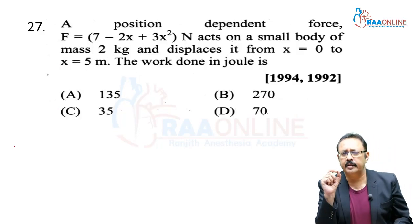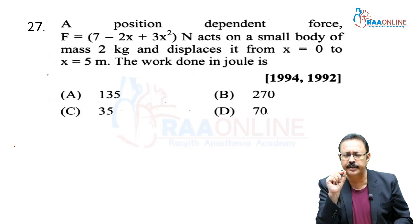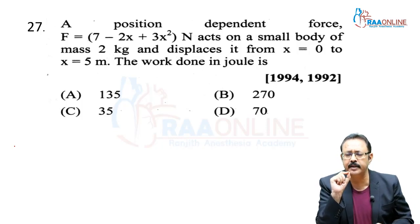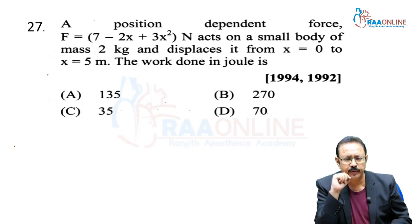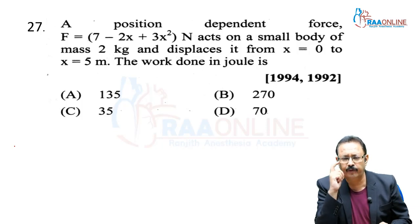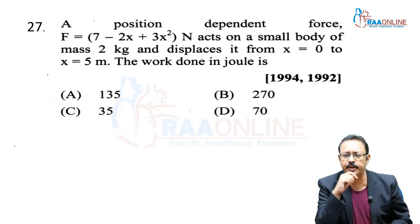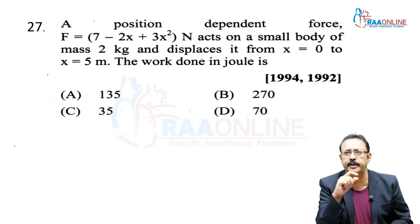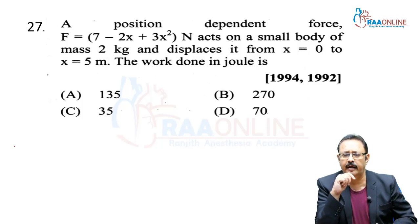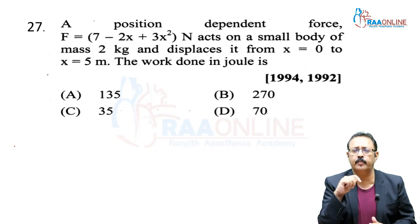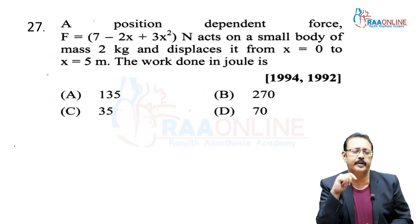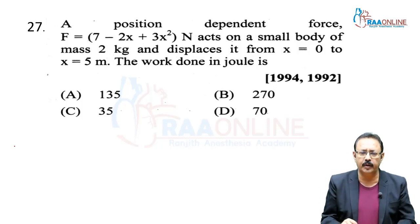Next: A position-dependent force F(x) acts on a small body of mass 2 kg and displaces it from x = 0 to x = 5 m. The work done in joules is? Since force is variable and no graph is given, we use integration.